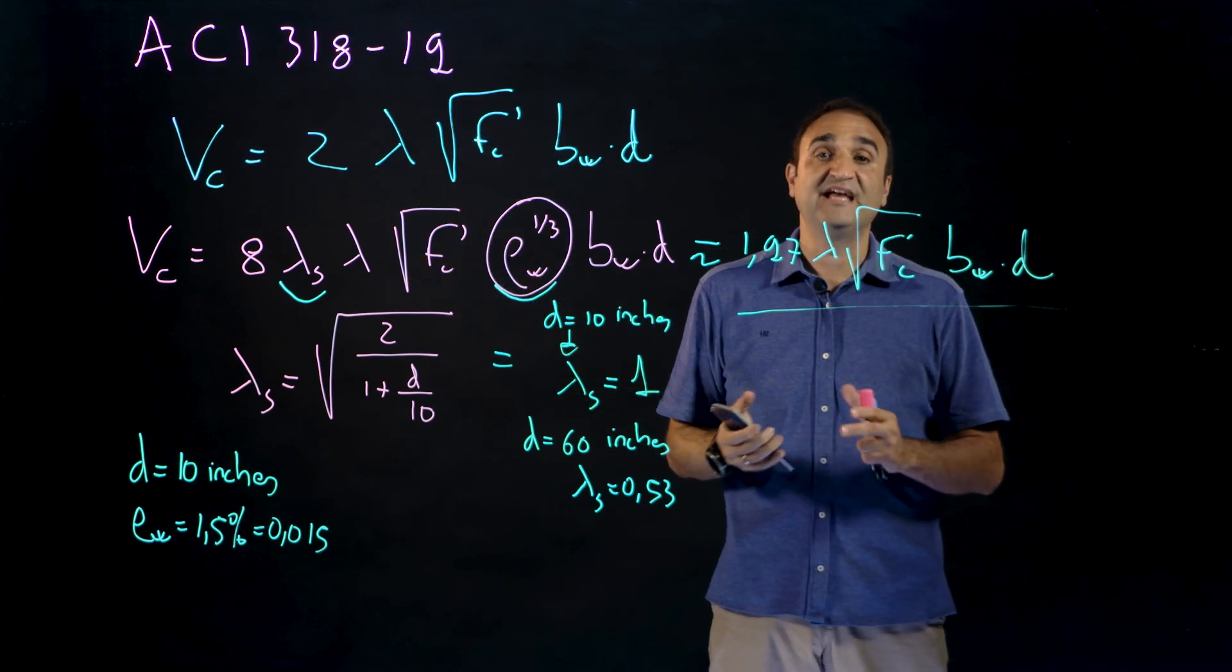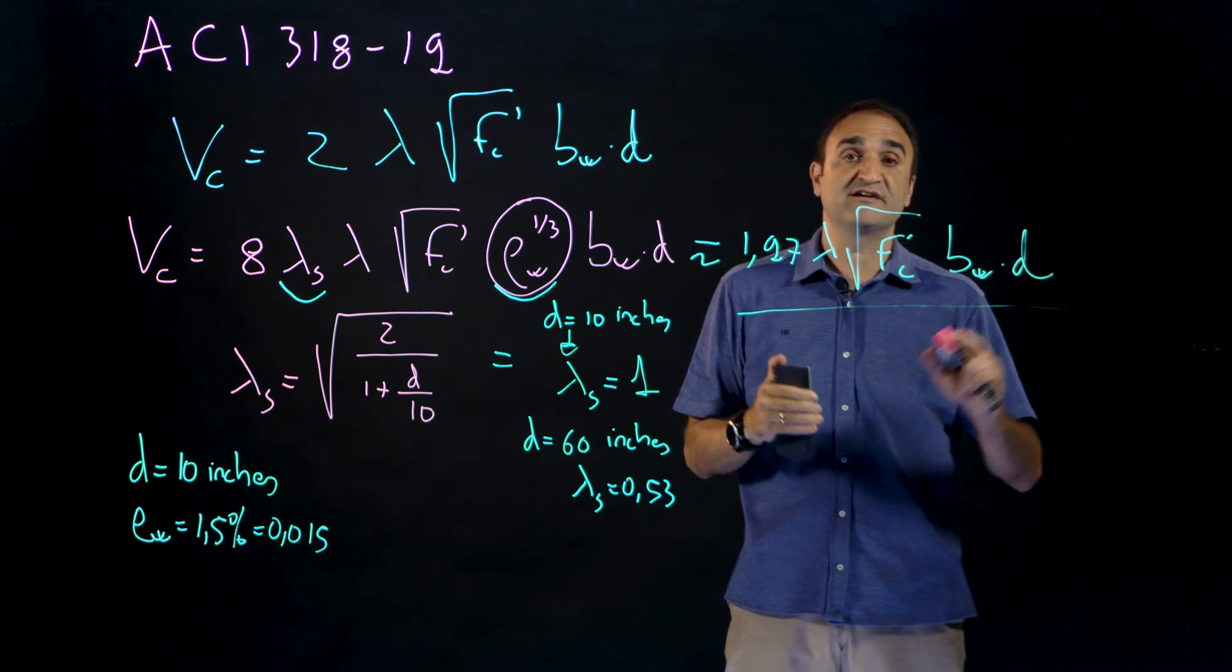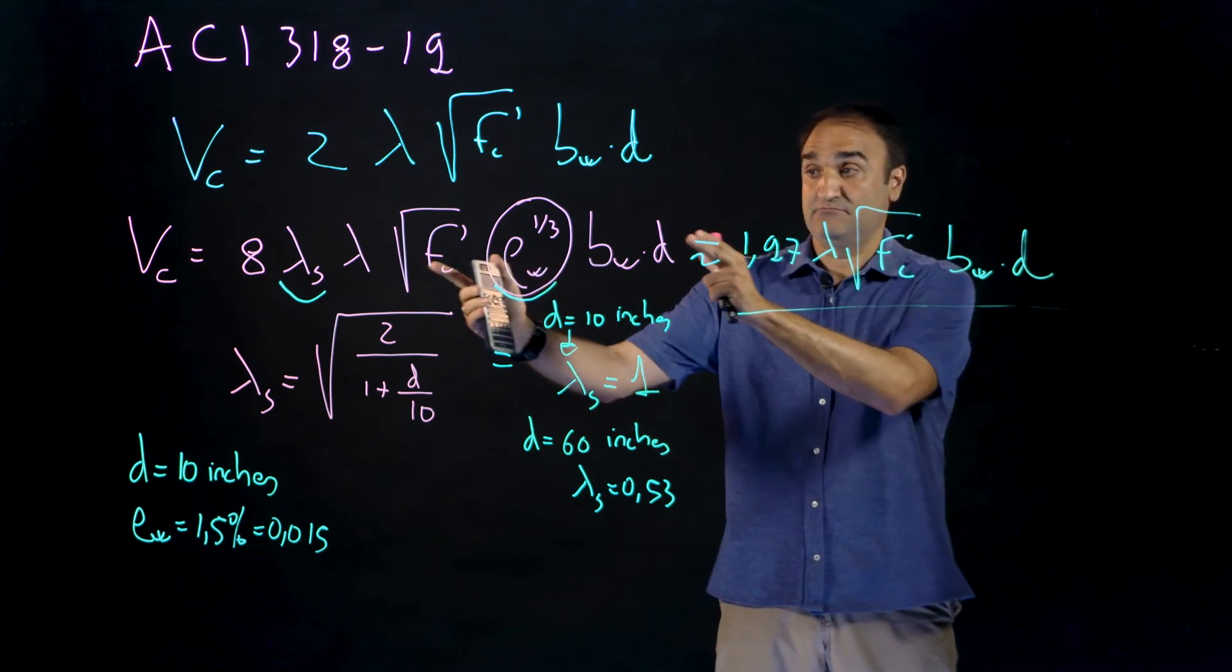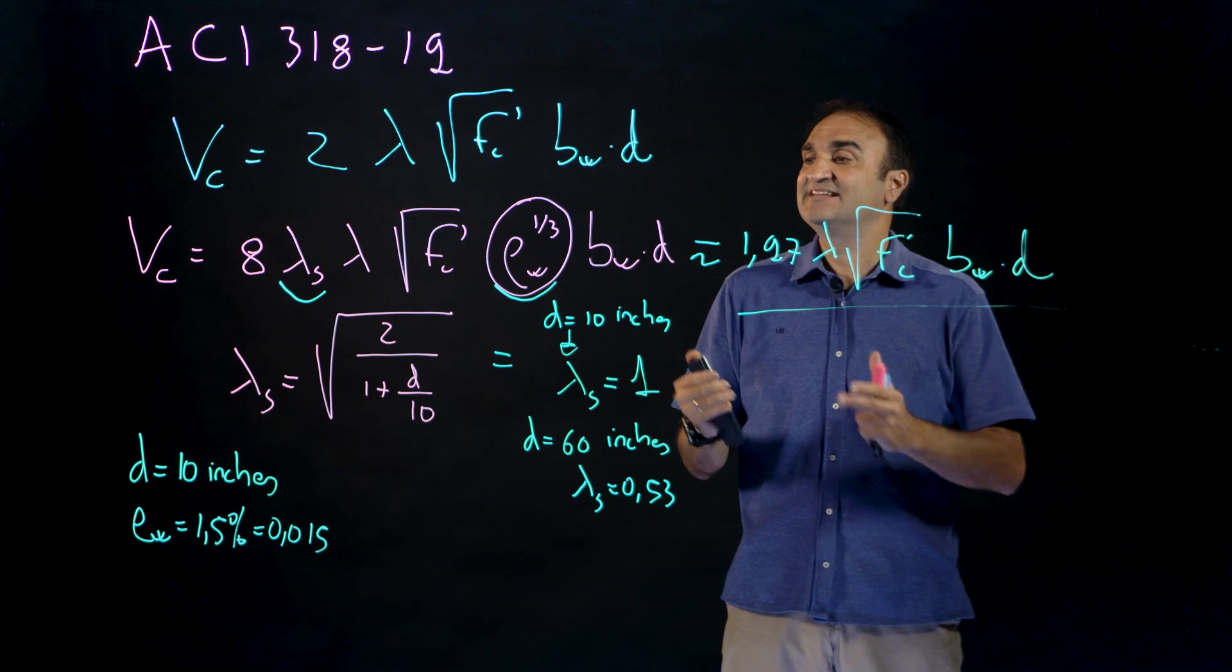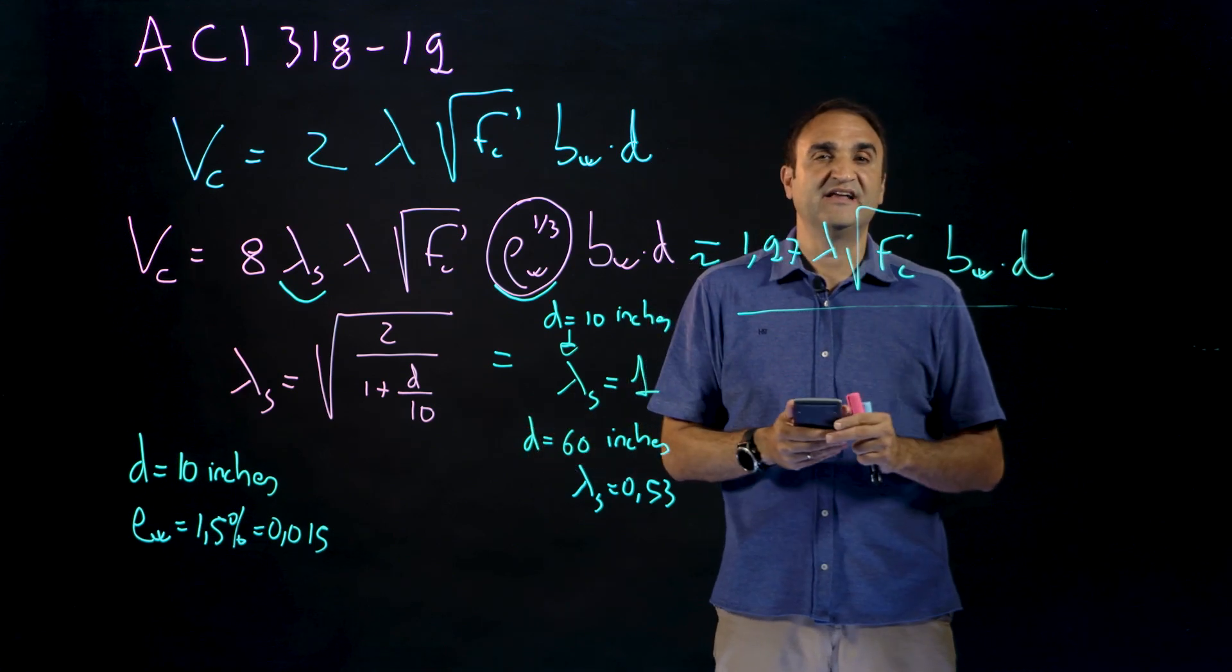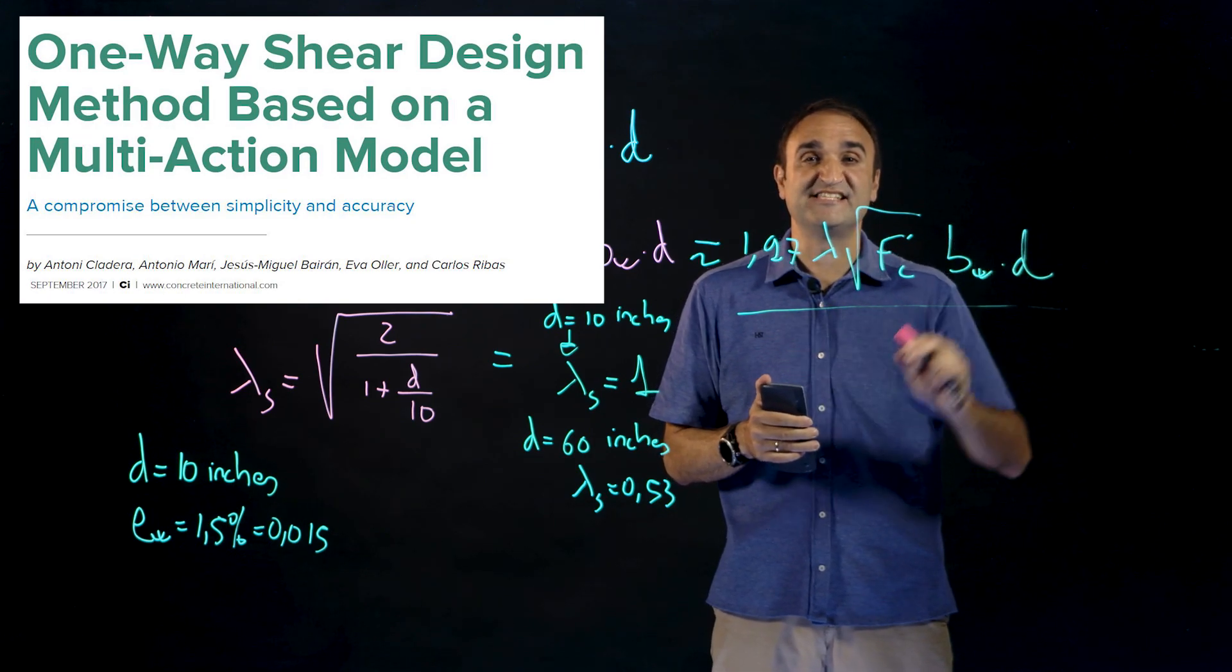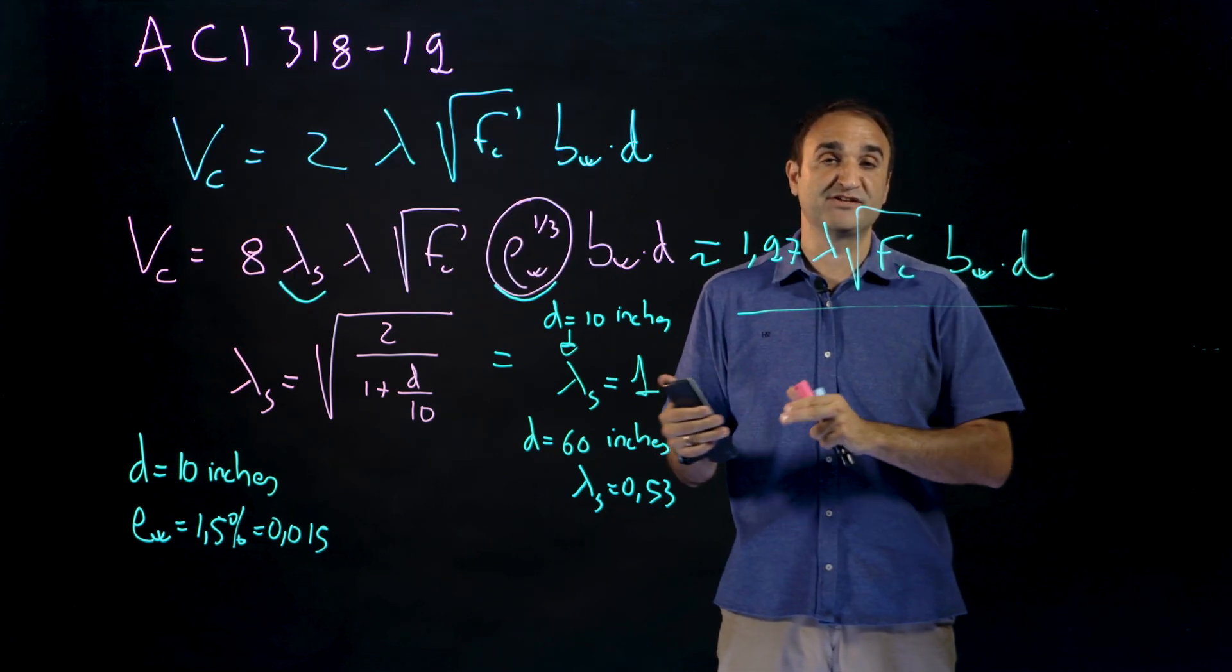And in that paper they explained that was a process in which six different groups of researchers from all over the world contributed presenting our proposals to update the code. This equation comes from the six different proposals and easiness of use was very important. Two years ago in the Concrete International journal from September 2017 you will find the different six proposals.